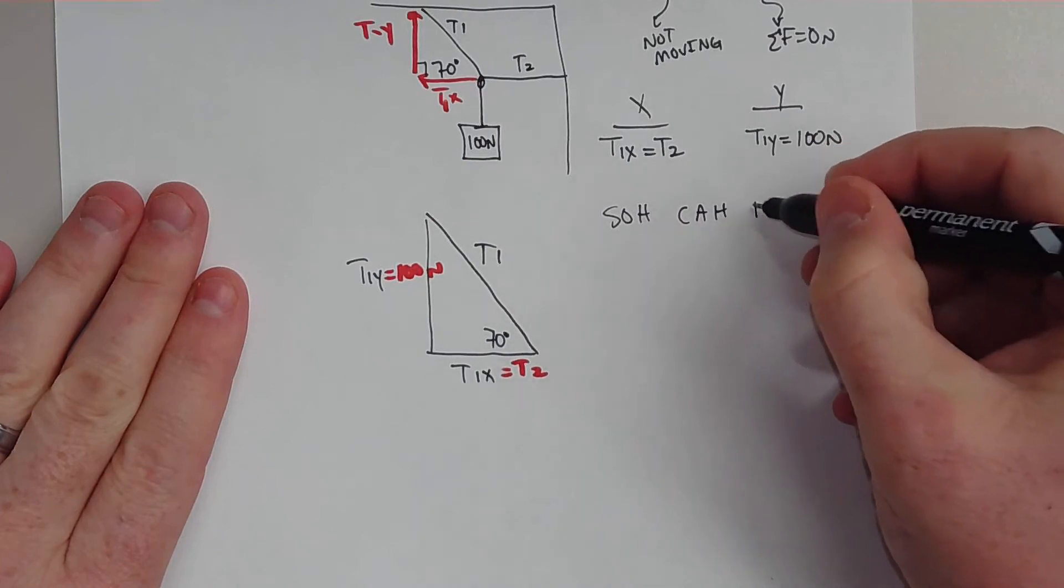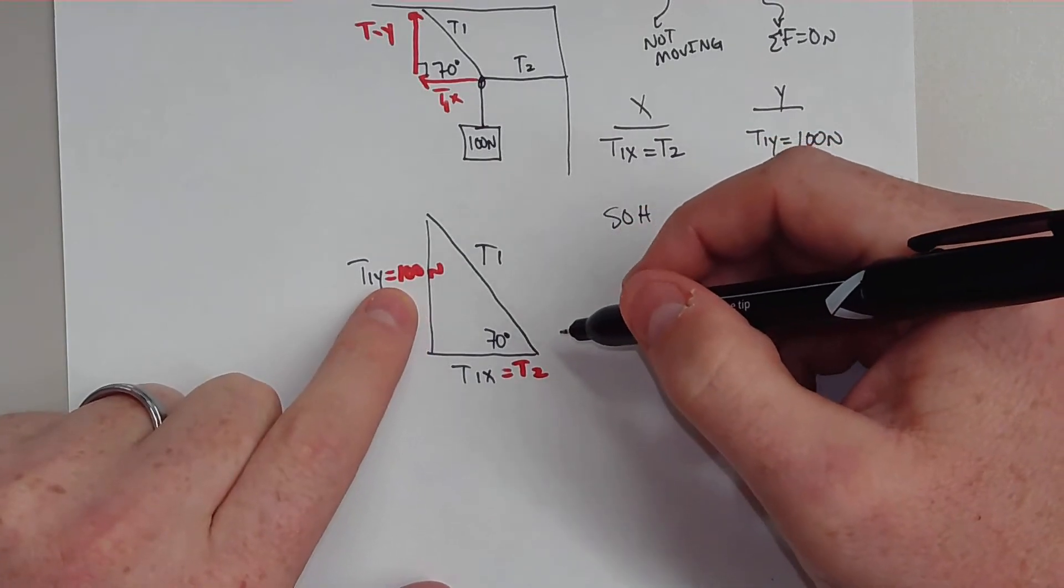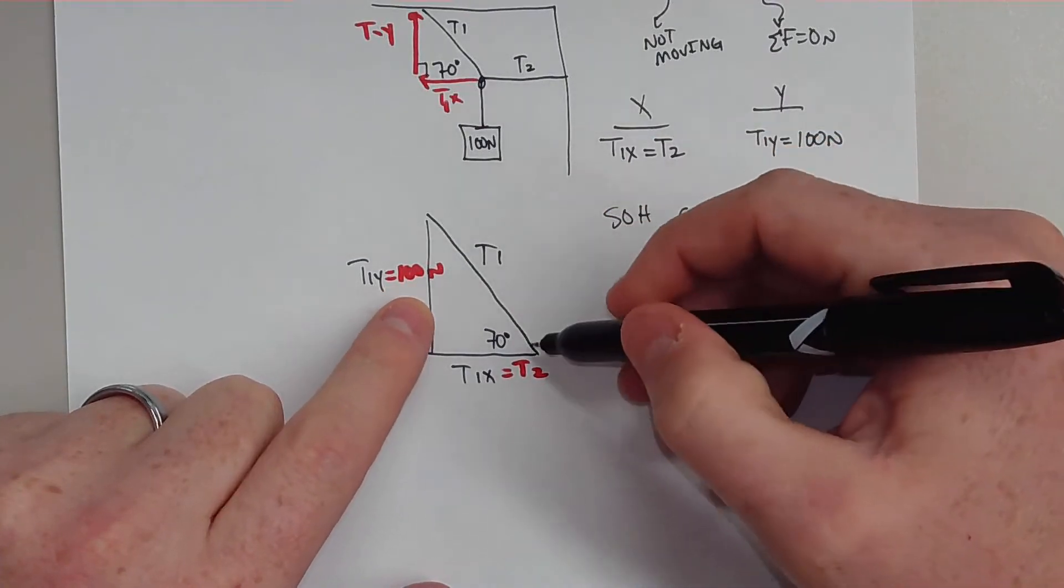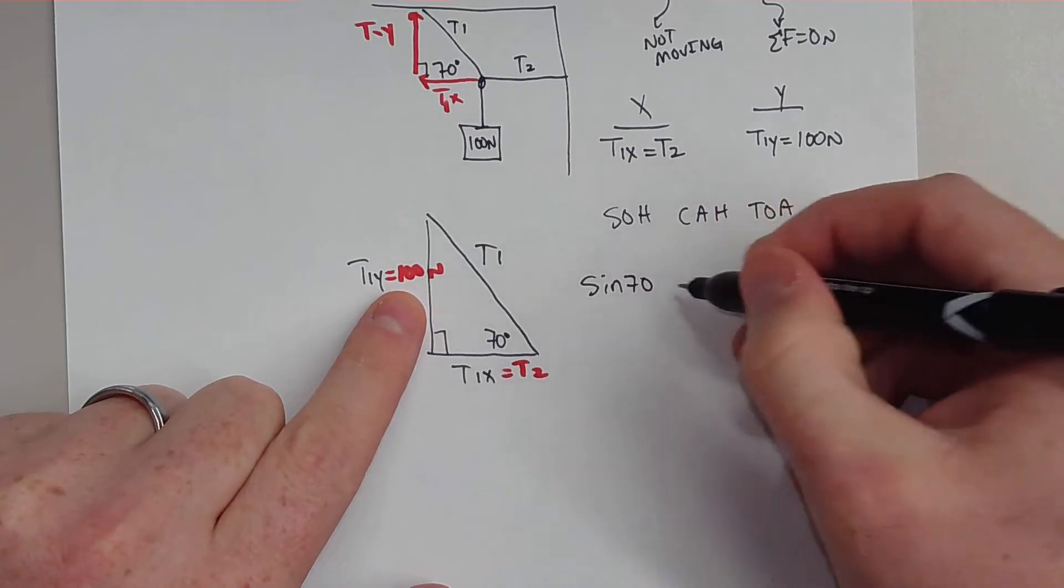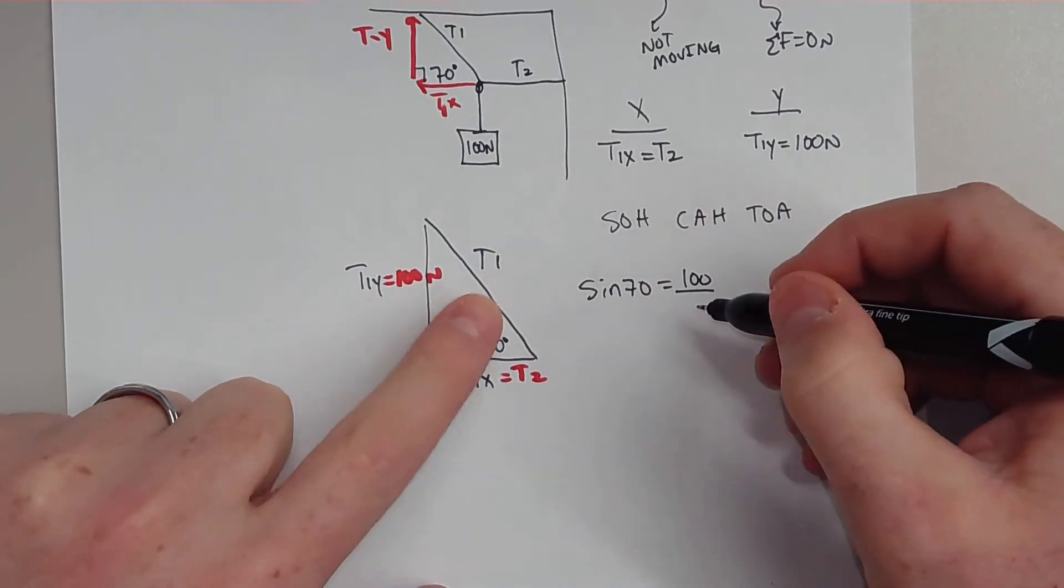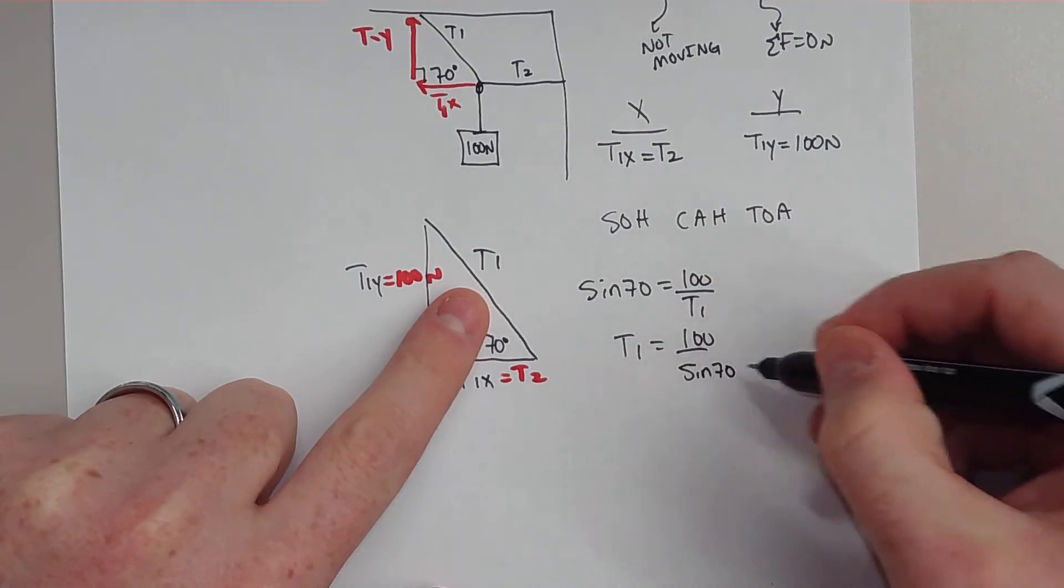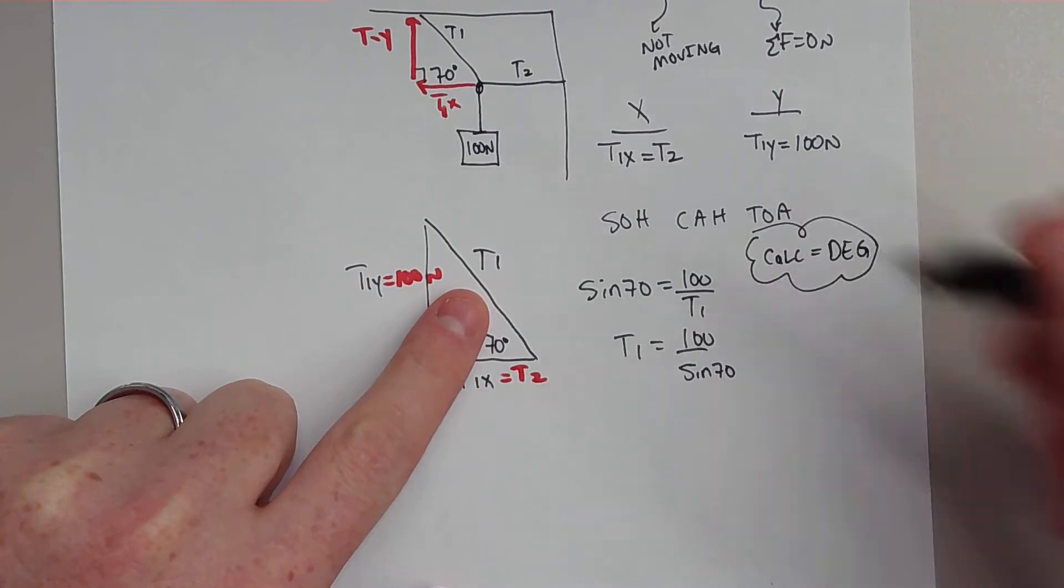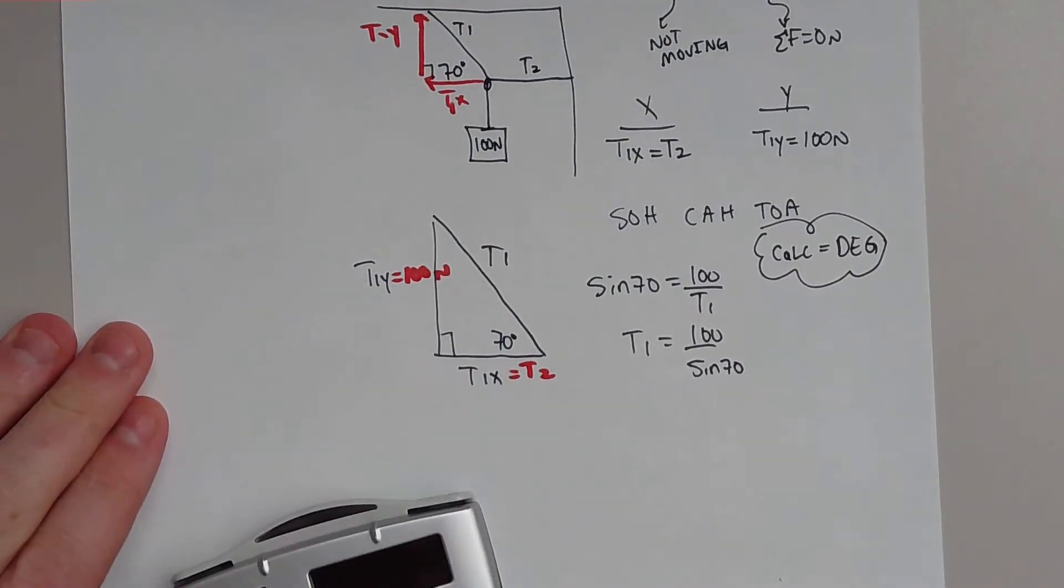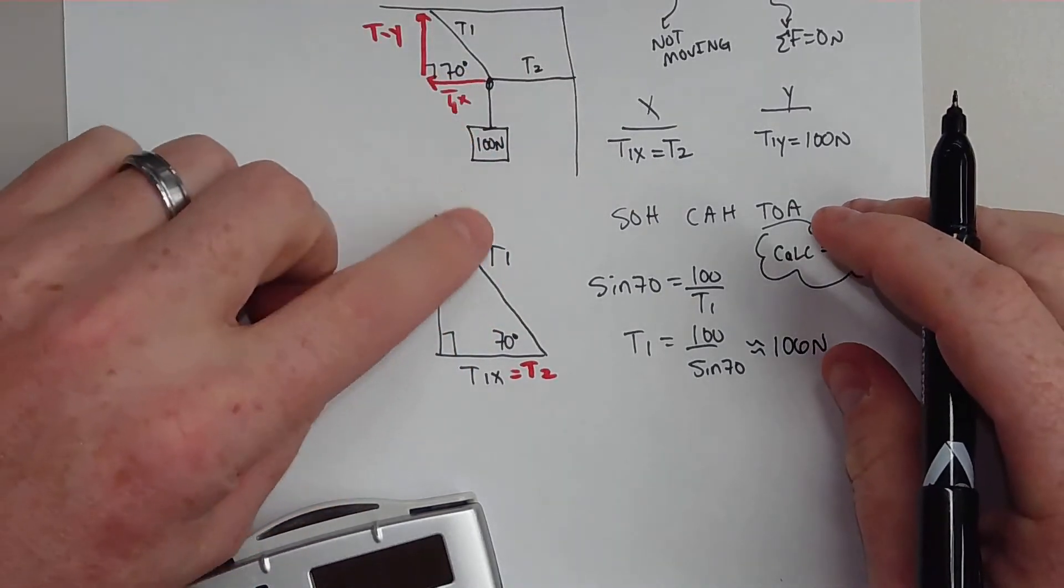A lot of static equilibrium problems like to use trigonometry. If we know a value for our opposite side, and we're looking for our hypotenuse, this is my angle, my right triangle. I have the opposite and hypotenuse, so that's going to be sine. So sine of 70 is equal to the opposite over my hypotenuse, which is T1. So T1 will be 100 divided by sine of 70. Make sure your calculator is in degrees. That gives me approximately 106 newtons.